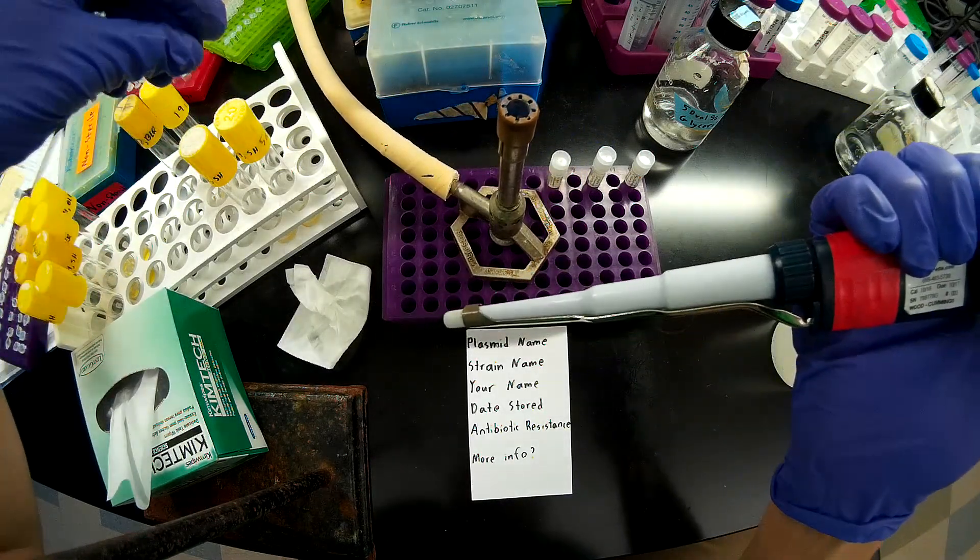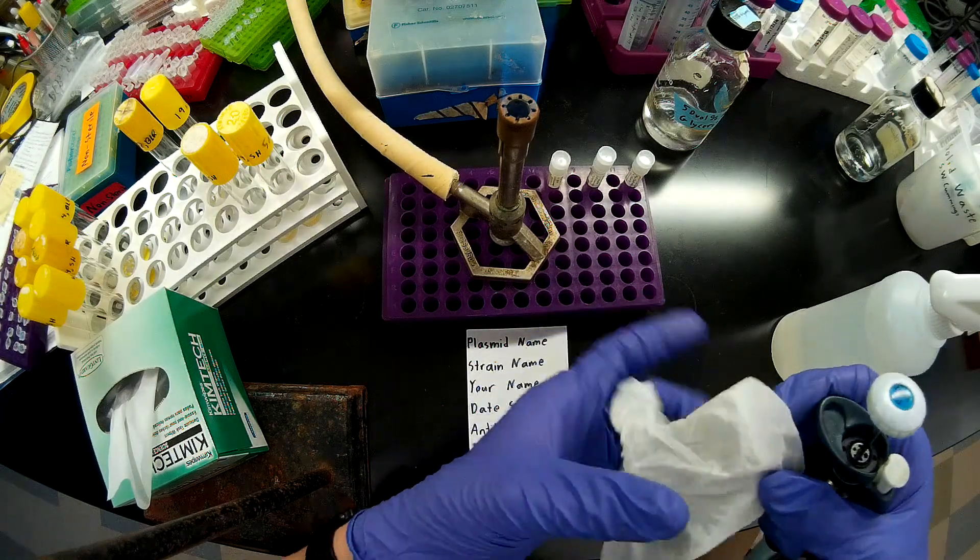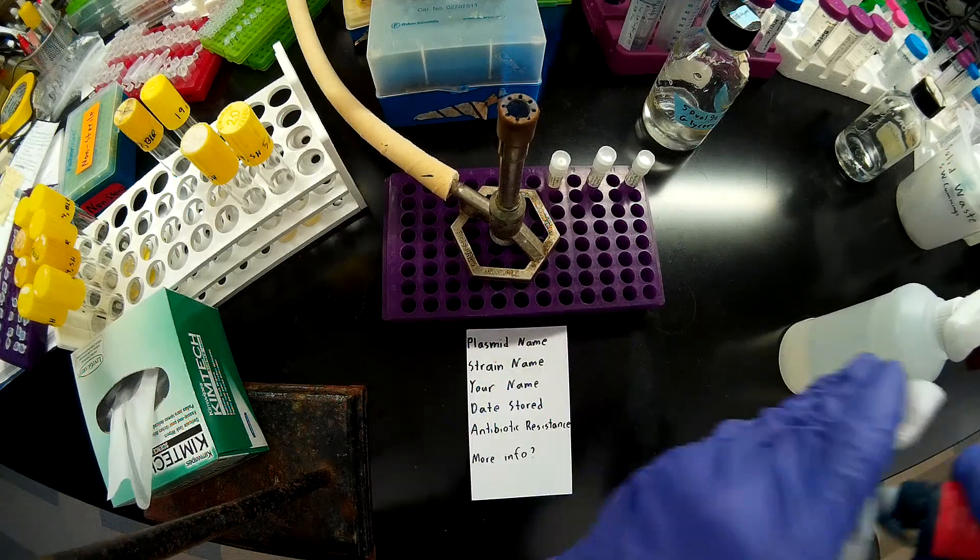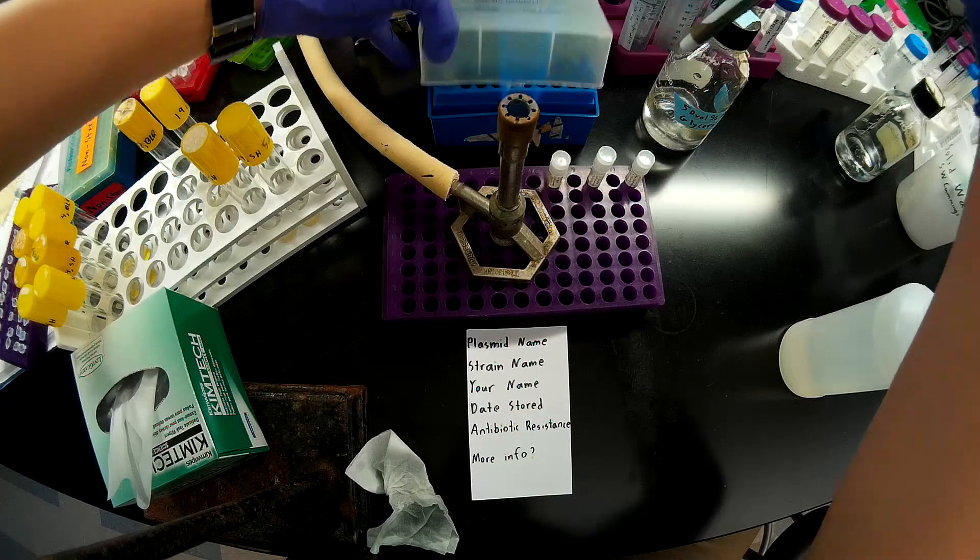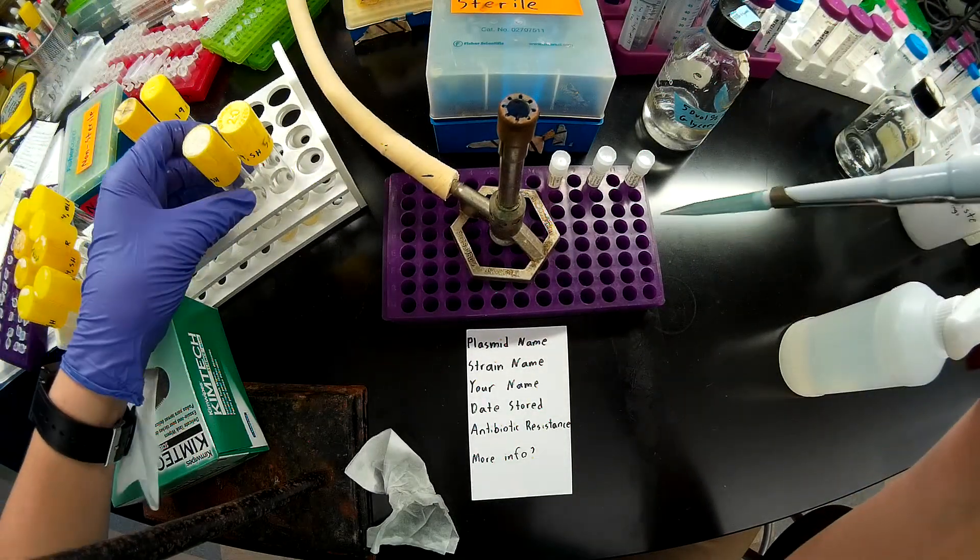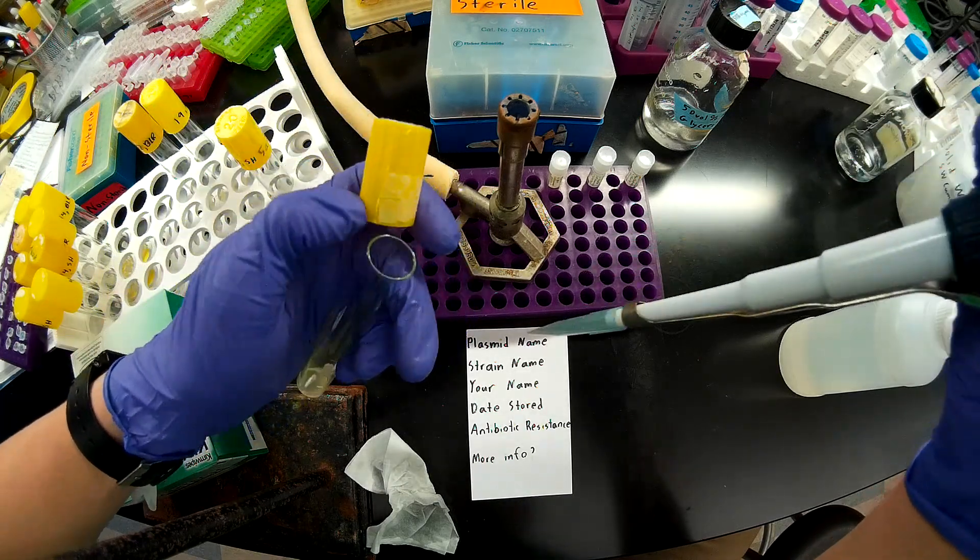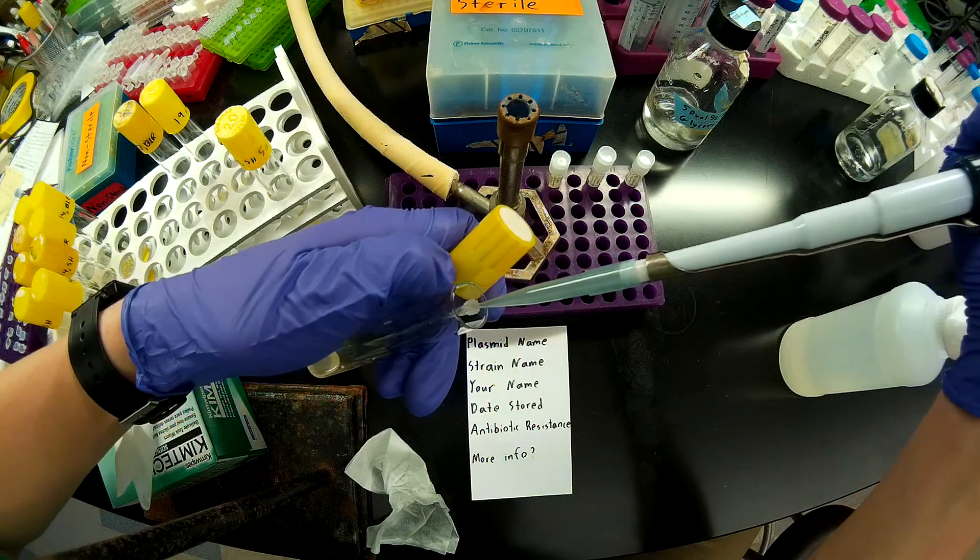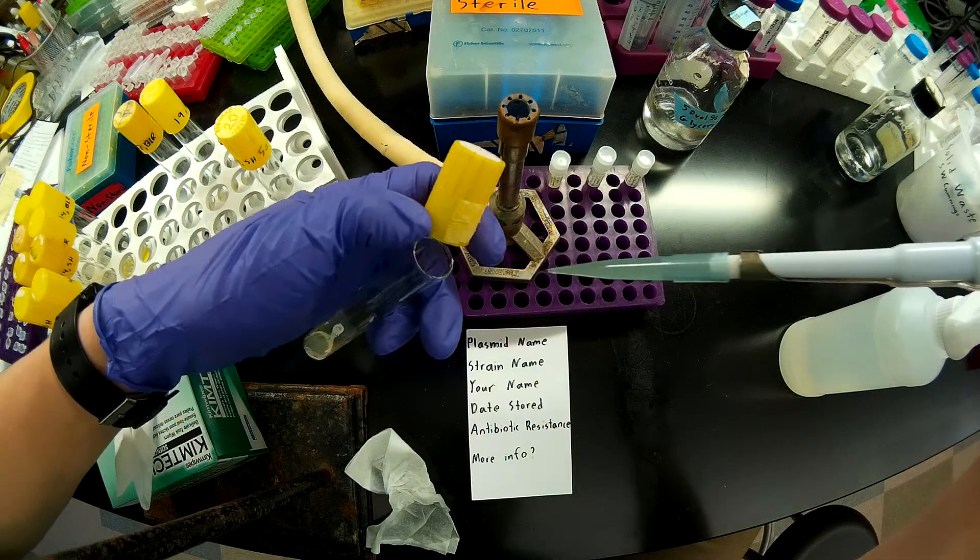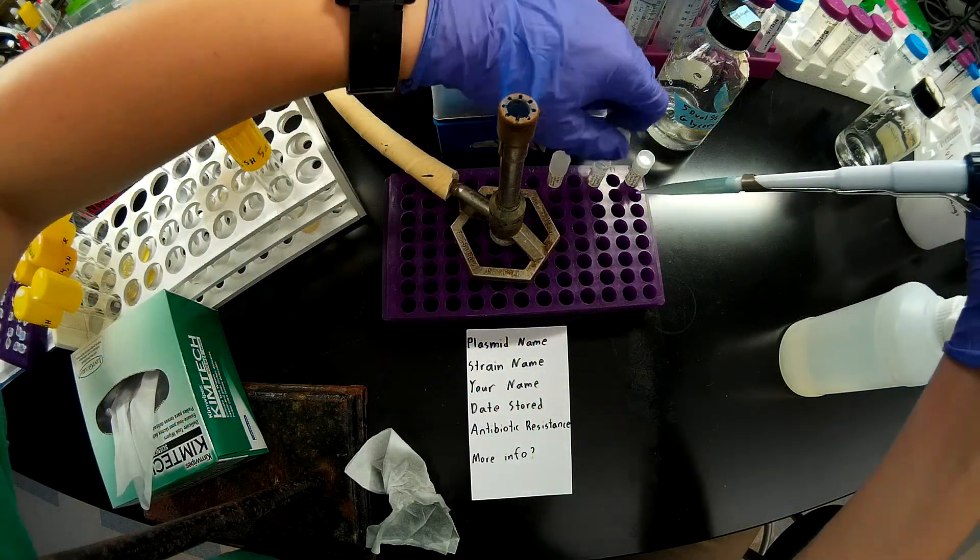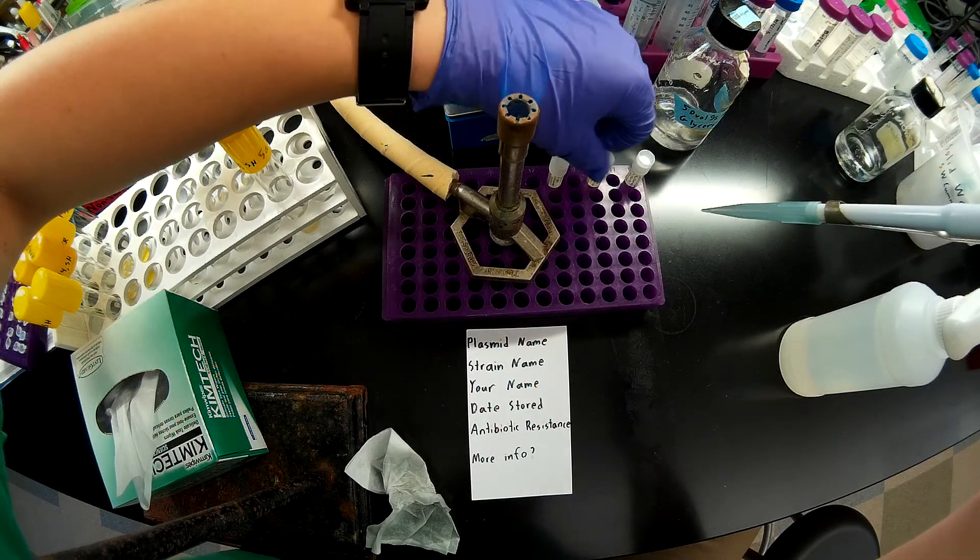So before I put this down in another culture tube, I'm going to want to clean off the barrel again with 70% ethanol. Take a new pipette tip, swirl the tube to make sure that it's really well re-suspended. Okay, adding my bacteria, screwing the cap on nice and tightly.